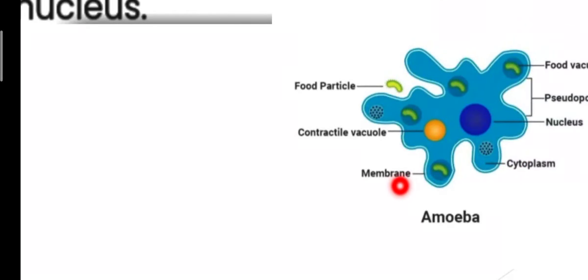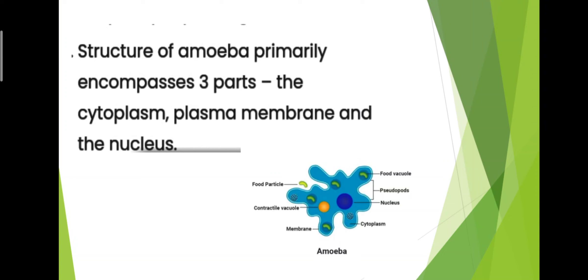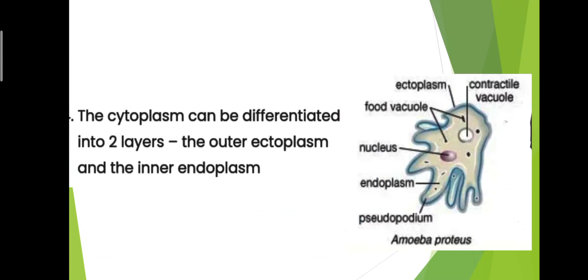The plasma membrane and the nucleus. The cytoplasm can be differentiated into two layers: the outer ectoplasm and the inner endoplasm.